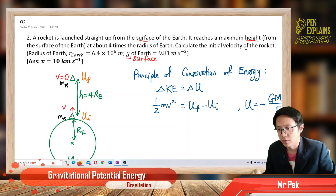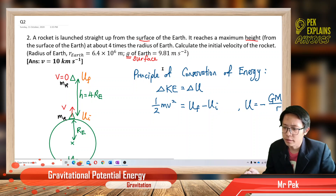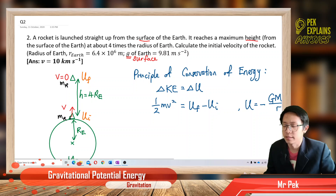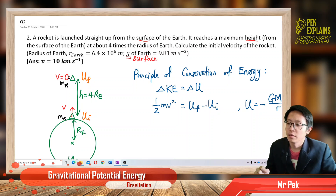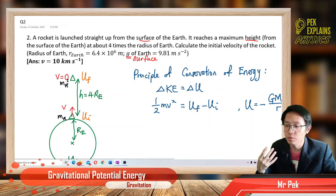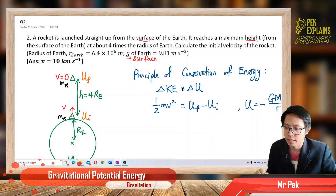Finding the initial velocity is about conservation of energy. Initially at the Earth's surface, the rocket is launched with an initial velocity, so it has kinetic energy. As it goes upward, kinetic energy converts to potential energy until all kinetic energy is gone at maximum height, where velocity is zero. We use the principle of conservation of energy.